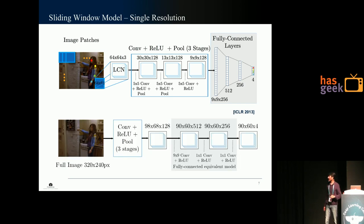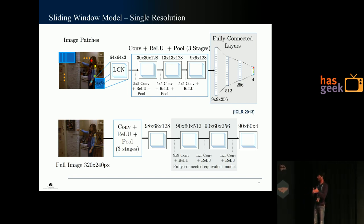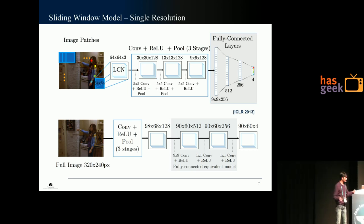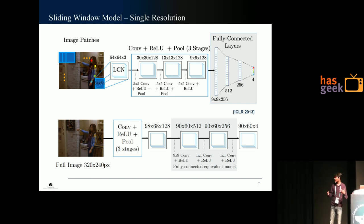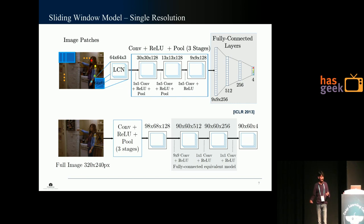The next thing we did was to fold this sliding window architecture inside the convolutional model — the ConvNet itself. This is done by replicating the fully connected layers throughout the image using 1x1 convolutions, a very common technique used since the 1970s. Now the input is an image and the output in one shot is the four heat maps. Additionally, during learning we get to see all the images and all the negatives, so gradients from all the negatives help training.